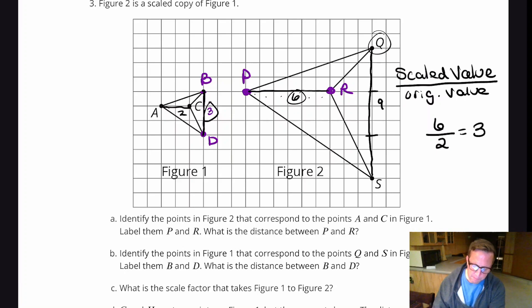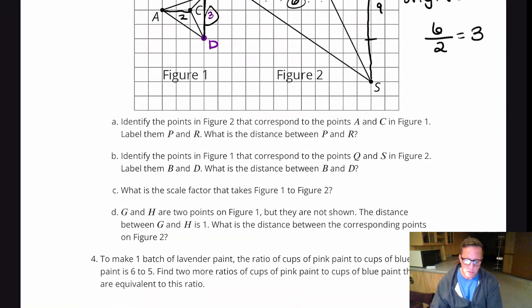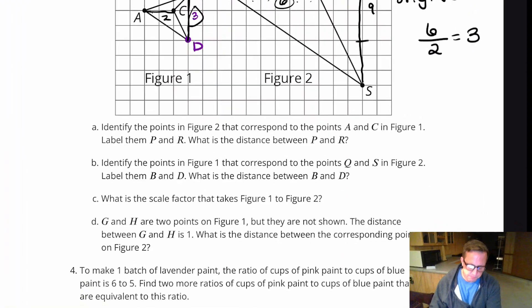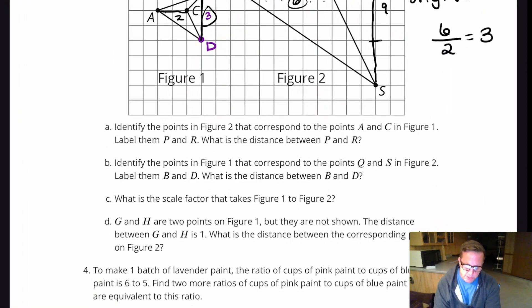From there to there. All right. G and H are two points in figure one. But they're not shown. The distance between G and H is one. What is the distance between the corresponding points on figure two?